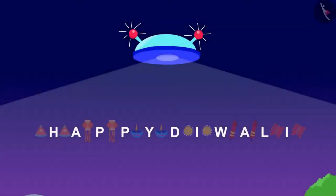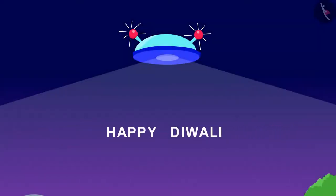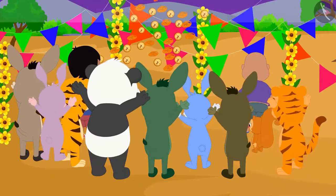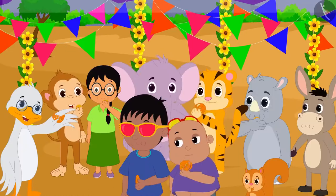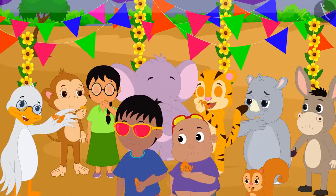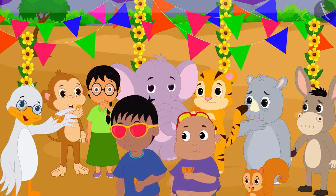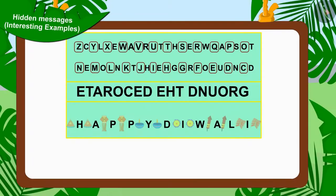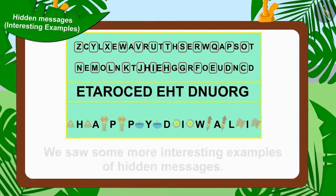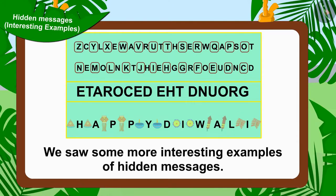As soon as Chanda solved that message, a lot of delicious sweets started raining from the sky. All the villagers ate the sweets with great pleasure. Children, in this video we saw some more interesting examples of hidden messages.